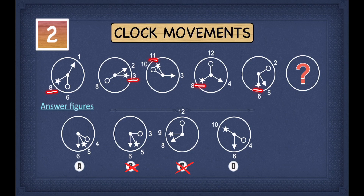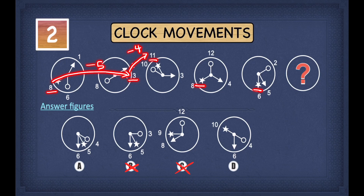What do we do to the number on the left to get the number on the right? To get from 8 to 3, we take away 5. To get from 3 to 11, we take away 4 — because subtracting means moving backwards, so subtracting 4 from 3 goes through 2, 1, 12, and lands on 11. To get from 11 to 8, take away 3. To get from 8 to 6, take away 2.